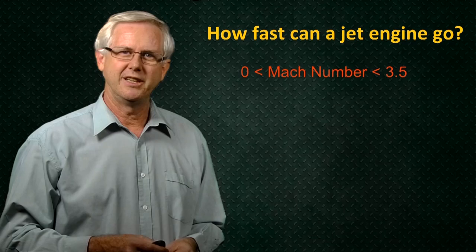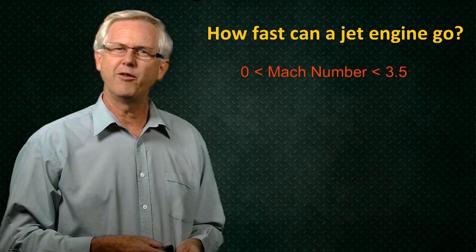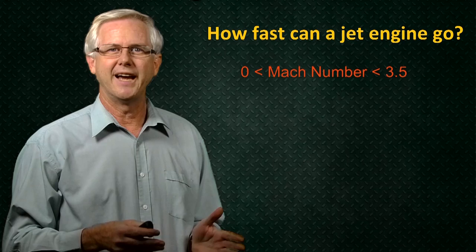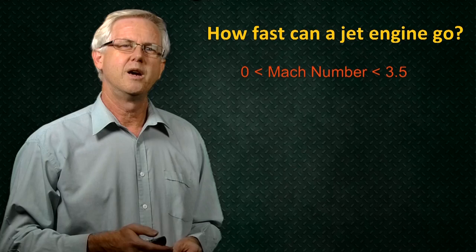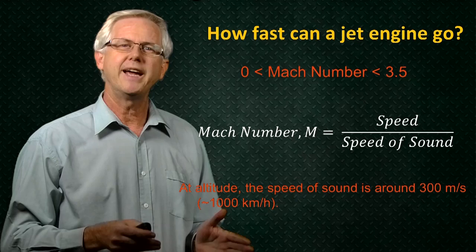The good thing about a jet engine is that you can use it to take off from a runway. So we can start off from zero speed. And jet engines are capable of reaching speeds of around Mach 3.5. So they are not capable of getting us above Mach 5 and into the hypersonic regime. Remember from our previous unit that the Mach number indicates how many times the speed of sound an object is moving.